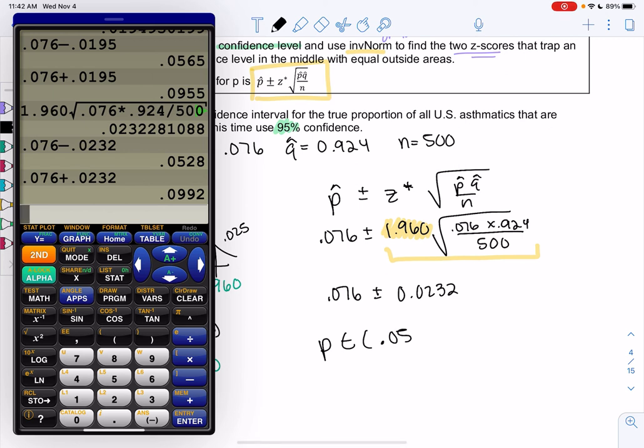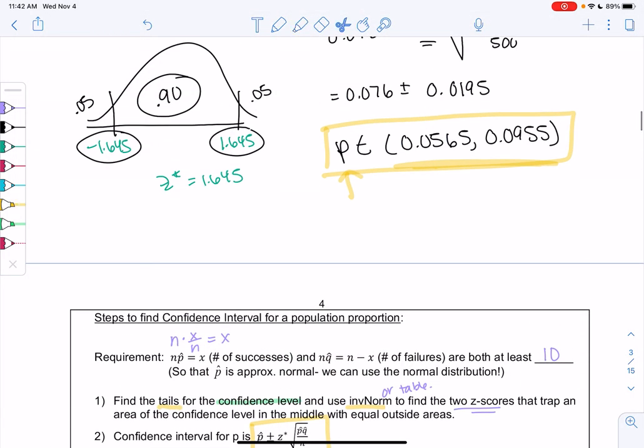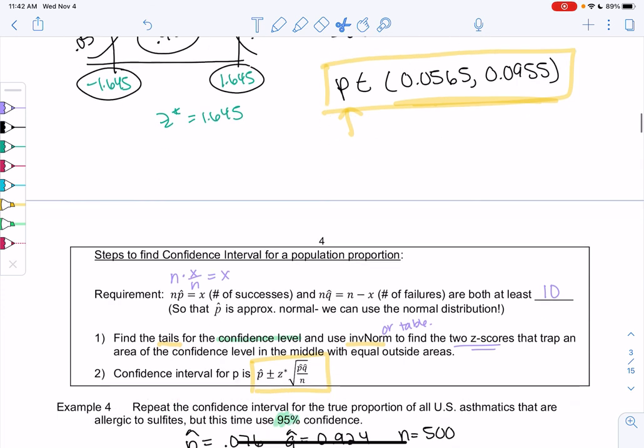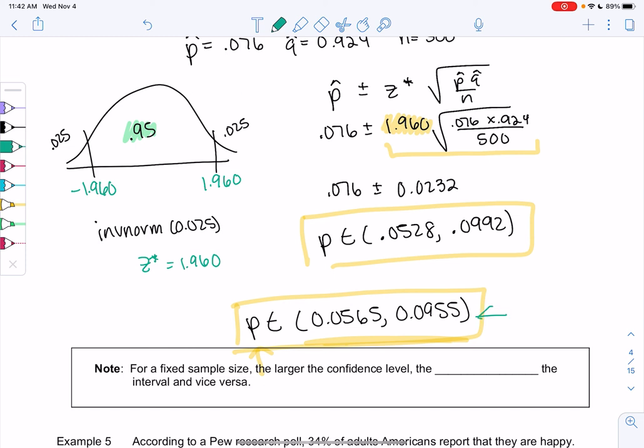And so we get p is in the interval. My lower is 0.0528, and my upper is 0.0992. So I'm just going to copy the previous one so we can compare. Just to have them on the same page. So 95% was 0.0528 up to 0.0992, and then 90% looks to be a little more narrow because it starts at 0.0565 up to 0.0955. If you were to graph these on the number line, it's a little bit shorter because it ends a little bit sooner.